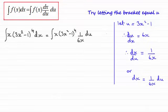So where do we go from here? Well, you'll notice that the x here cancels out with the x here. So we'll cancel those out. And what we're left with is 1 sixth of 3x squared minus 1 to the power 4. And the 1 sixth being a constant, I can bring it out the front of the integral. So we've got 1 sixth times the integral of all of 3x squared minus 1 to the power 4. And that's integrated with respect to u.